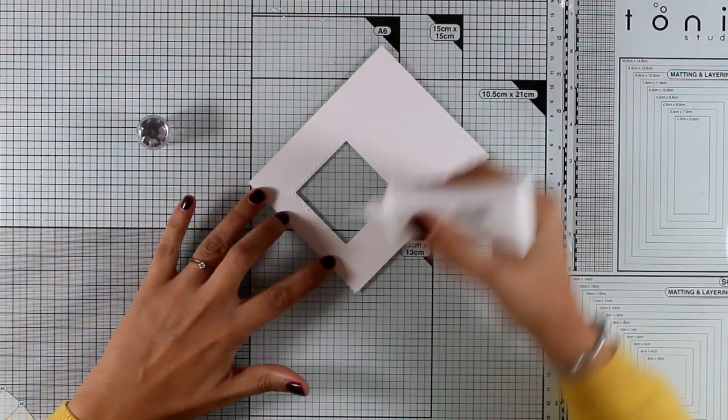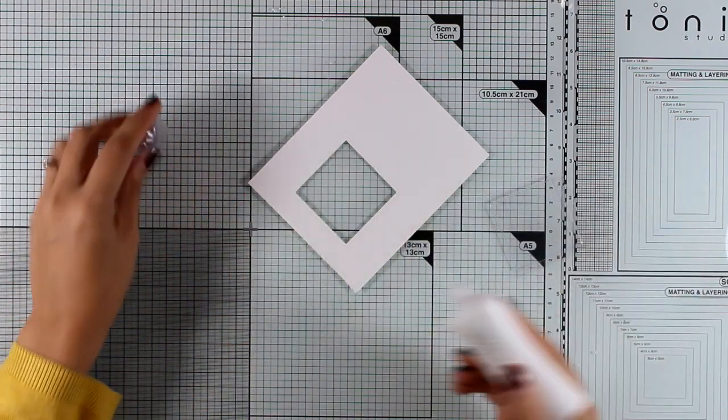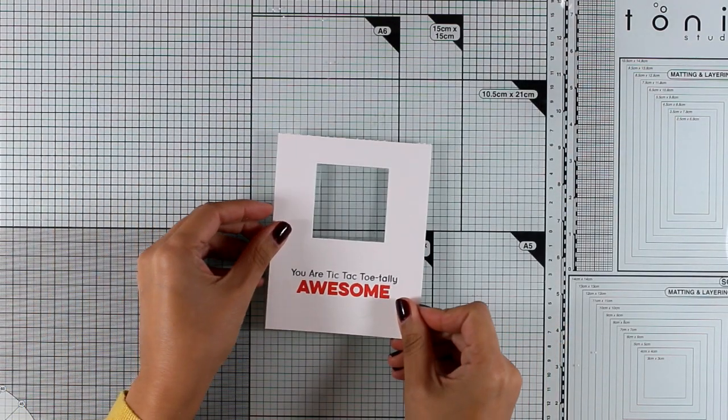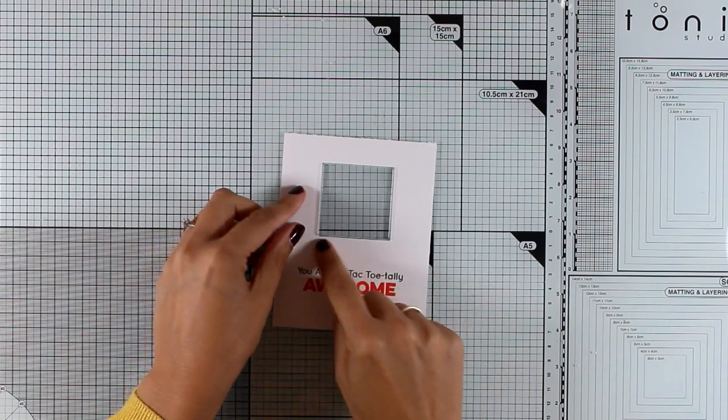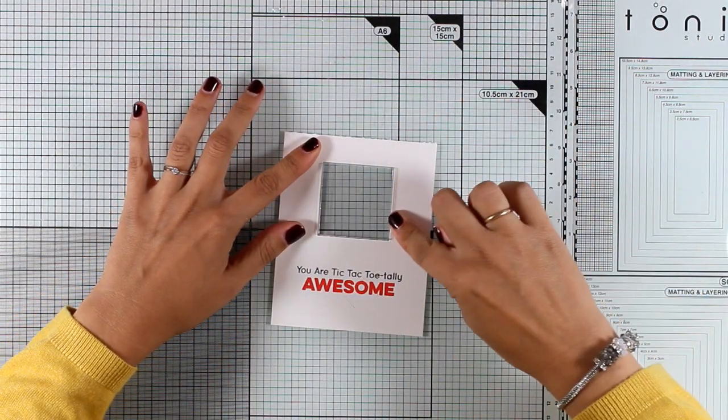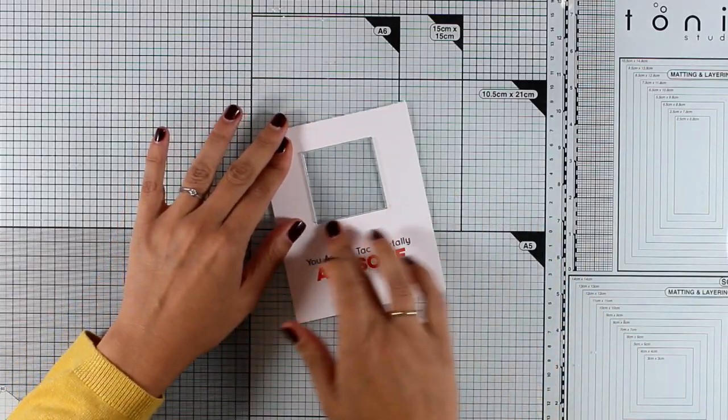Now I'm going to prepare the window for the shaker elements. So at the back of my panel, I used some white glue, and now I'm going to put this on top of the plastic pouch. I'm going to press with my fingers for a few seconds just to make sure that I have a nice bond.